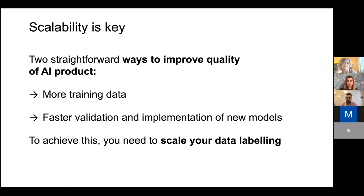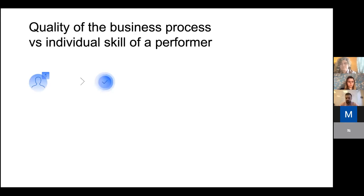If you're able to verify, test, and validate new models without having to wait months for collecting new data, you can move much faster than your competitors. To achieve both, you need to know how to scale your data labeling production. The major issue is the classical controversy between traditional management approaches and crowdsourcing. In the expert approach, you take a highly skilled person — a student, a data engineer — and they produce labels. The quality would be fine, but the problem arises when you need to scale production to 10, 100, or even thousands of people — it becomes purely impossible to manage classically.